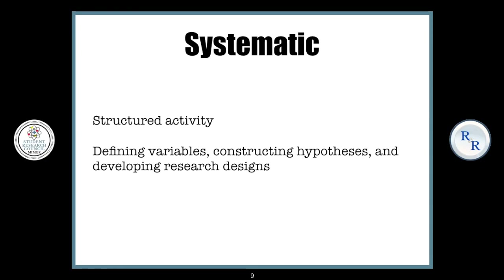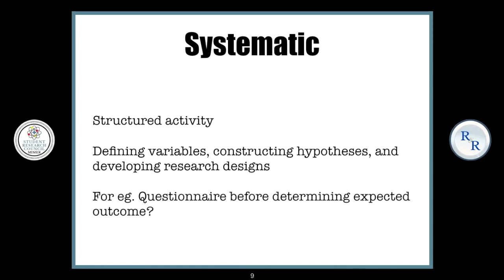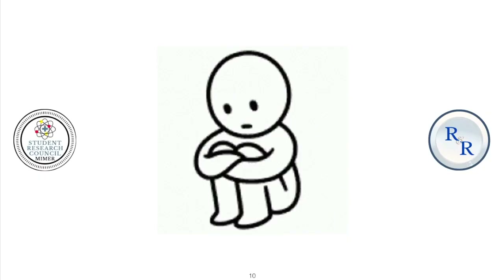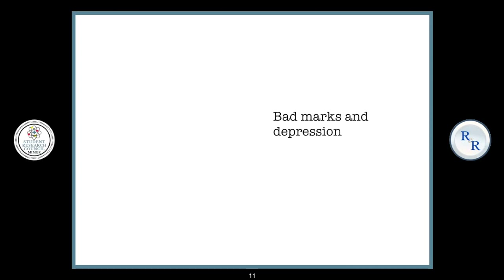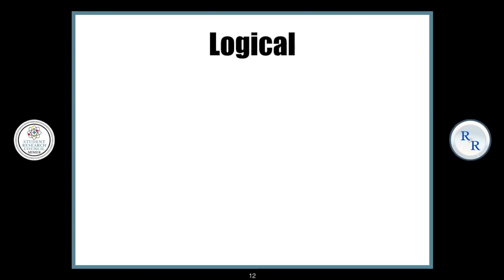The reason I'm focusing so much on the systematicity of research is that, for example, if you construct and distribute a questionnaire before determining the expected outcome, then the outcome might not actually match the expected outcome and hence it will be a wasted effort. Now let's explore the topics mentioned at the beginning. For example, bad marks and depression — the first thing that comes to mind is: are you going to ask whether bad marks cause depression or whether depression leads to bad marks? Which is exactly why research needs to follow a direction and needs to be logical.